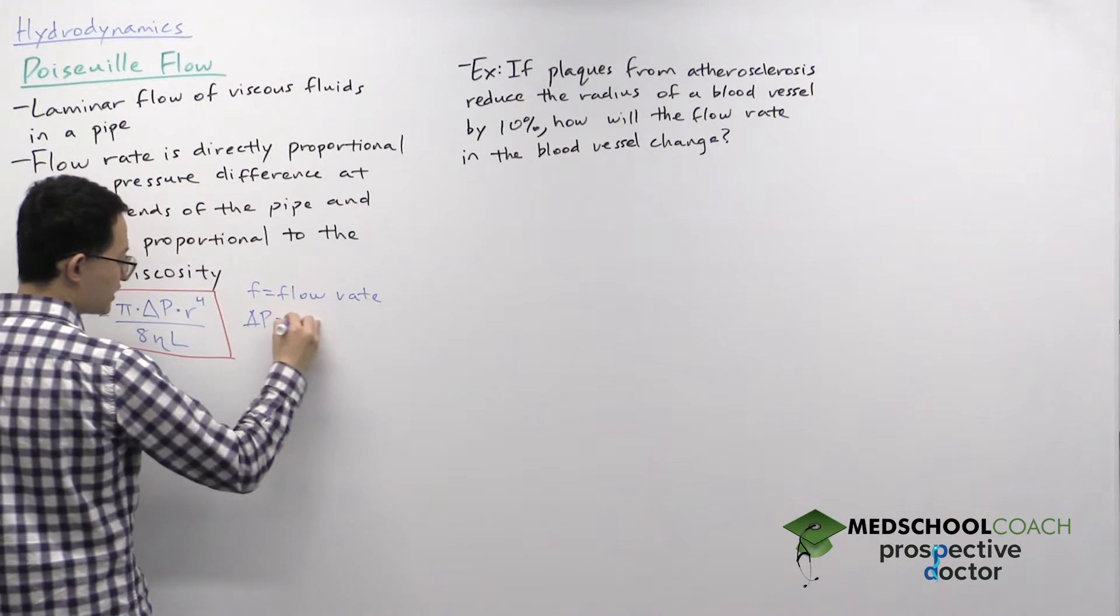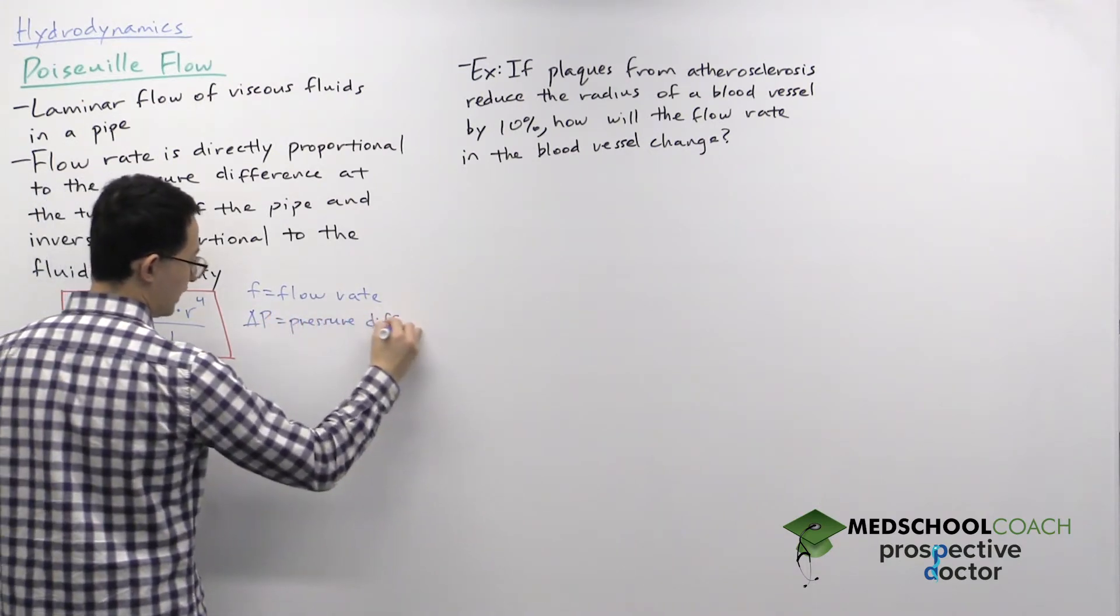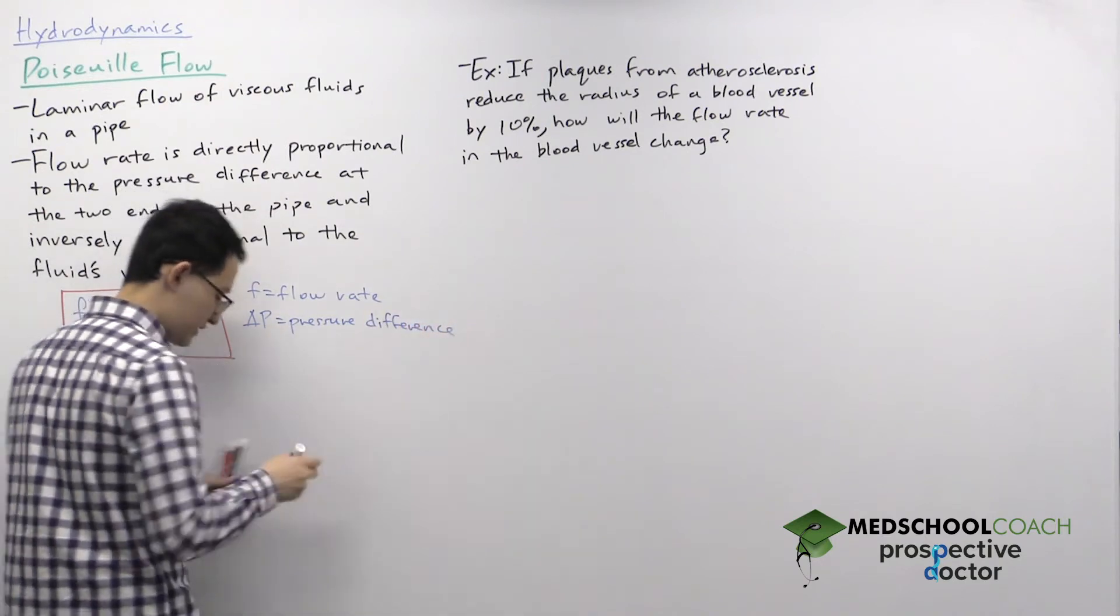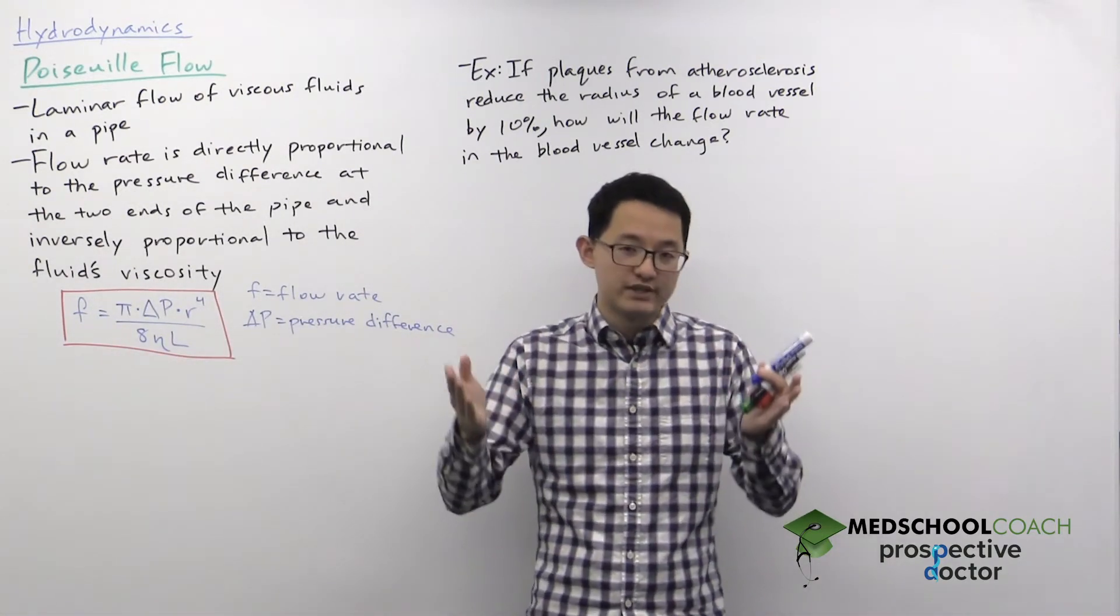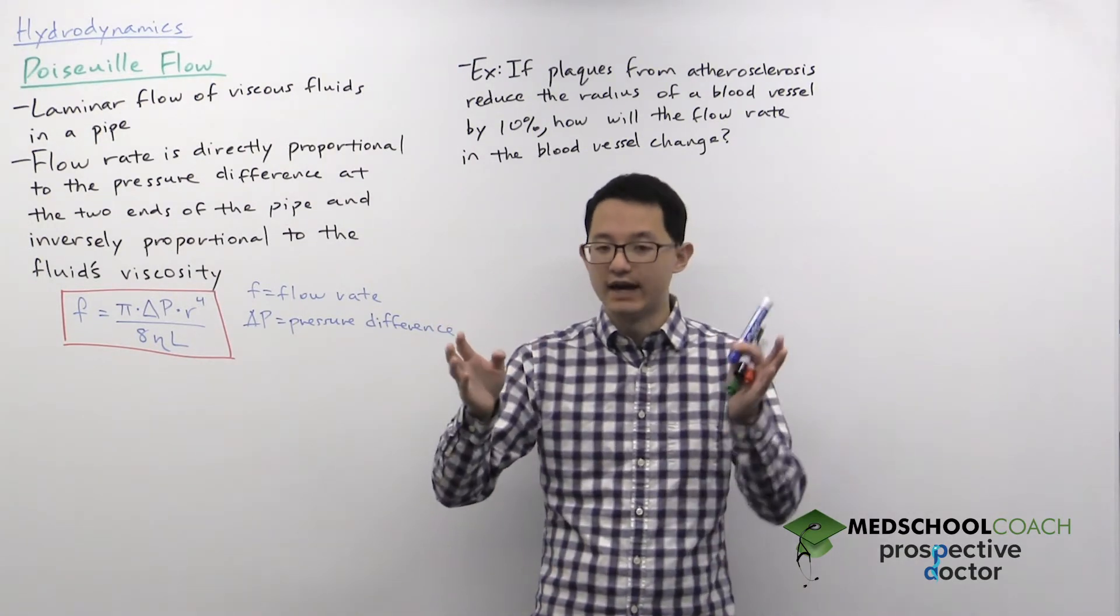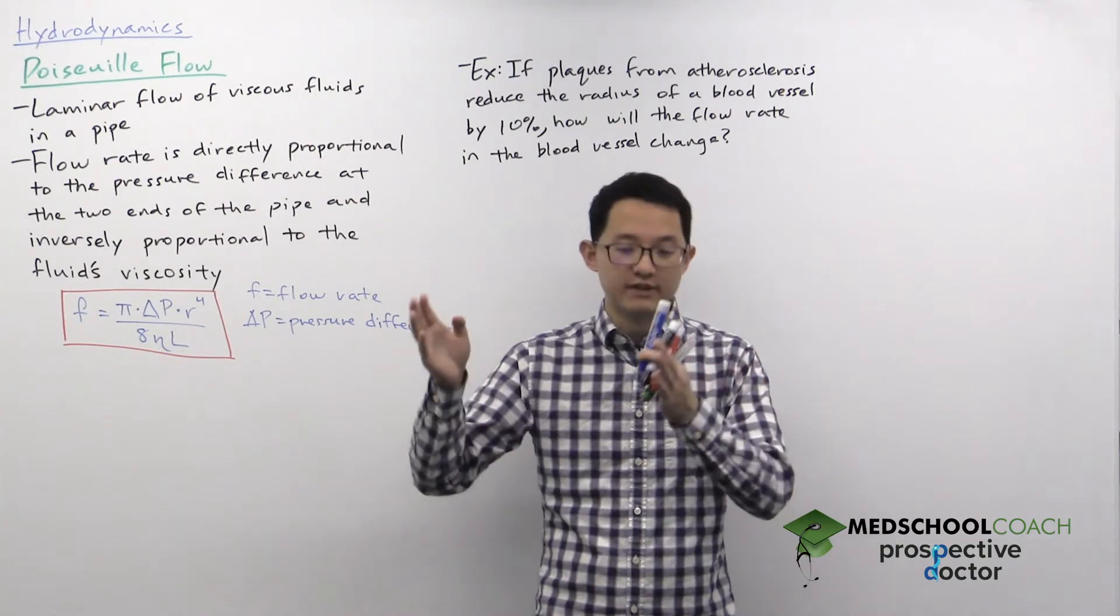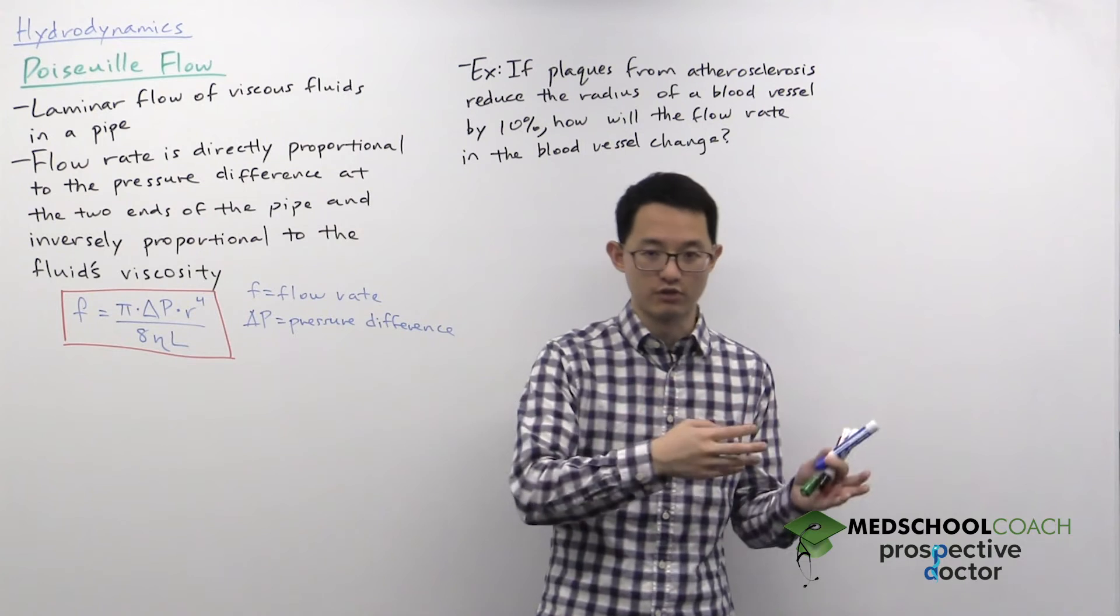Delta P, this is the pressure difference at the two ends of the pipe. The pressure difference is important because if the pressure is the same at both sides, then there's no reason for the fluid to flow. The pressure has to be greater on one side than the other in order for there to be flow rate. And of course, it's going to be in the direction from higher pressure to lower pressure.